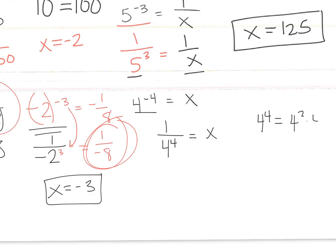The last one: 4 to the negative 4. I'm going to write it as 1 over 4 to the 4th. 4 to the 4th is the same as 4 squared twice, which is 16 times 16, which is 256. So x equals 1 over 256.